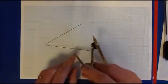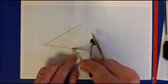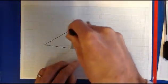Once you've done that, put your compass point on the point where the arc crosses one of the lines, in this case I've chosen the lower line, and draw an arc out here.